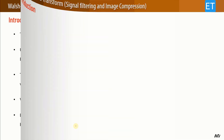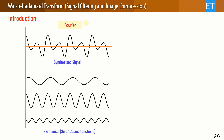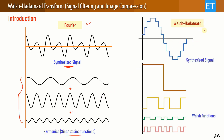In Fourier, a signal is decomposed into harmonics, which are continuous sine and cosine waves. If you add all these harmonics, you get your signal back. Similarly, in the Walsh-Hadamard transform, instead of continuous sine and cosine waves, we have discrete Walsh functions — rectangular waves with plus one and minus one values. If you add all these functions together, you get your synthesized signal back. That is a key similarity between Fourier and the Walsh-Hadamard transform.